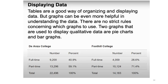On the other hand, for Foothill College, full-time students are 4,059, which is 28.6%, whereas part-time is 10,124, which is 71.4%. The total is 14,183 — 100%. Comparing both colleges, you can see that full-time and part-time enrollment at De Anza College is greater than at Foothill College.